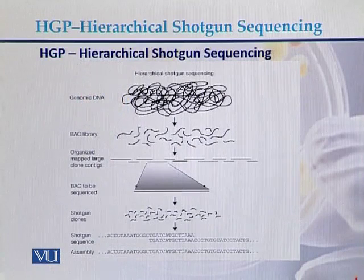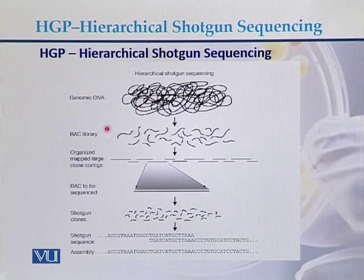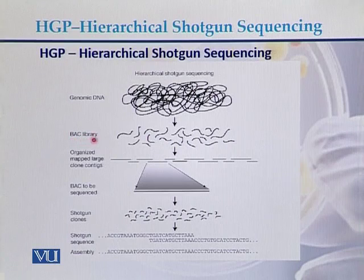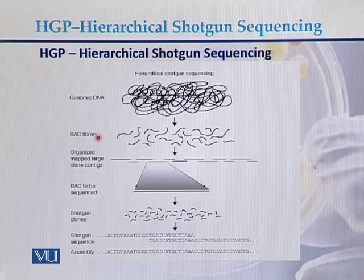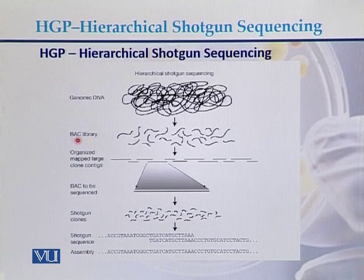In this diagram, we can see how hierarchical shotgun sequencing was performed. This is the genomic DNA. This genomic DNA was initially used to produce BAC libraries — it was digested with restriction enzymes. Fragments were produced, and those fragments were inserted into bacterial artificial chromosomes to produce BAC libraries.